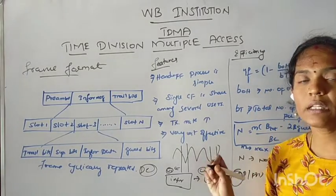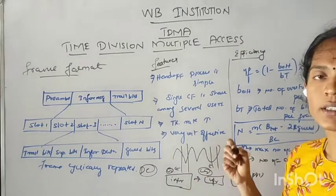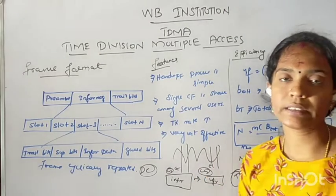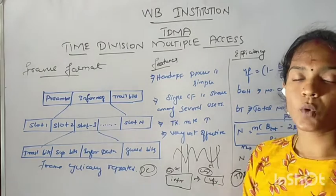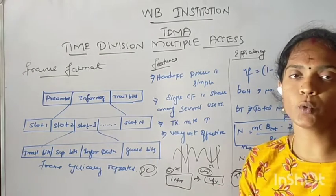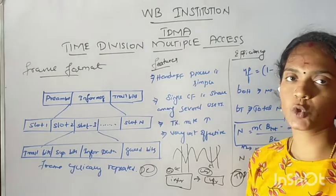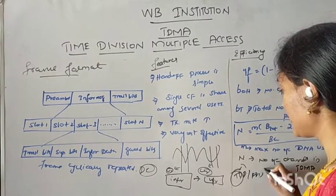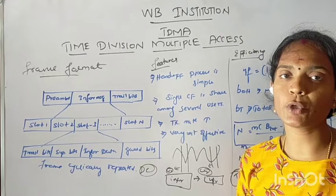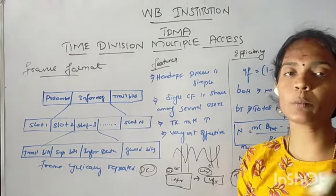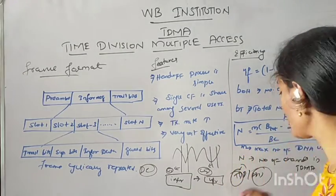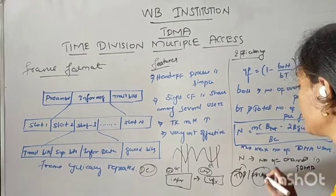In TDD, single frames are used for both the forward and reverse link. Half of the period is used for the forward link and another half for the reverse link. That is TDD. In FDD, different frames are used for the forward and reverse link. That is FDD.